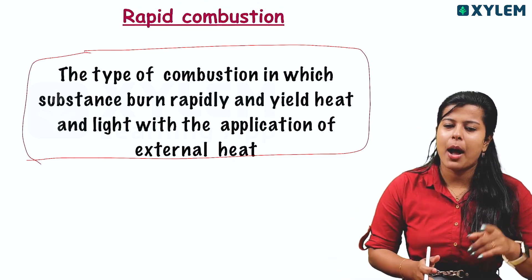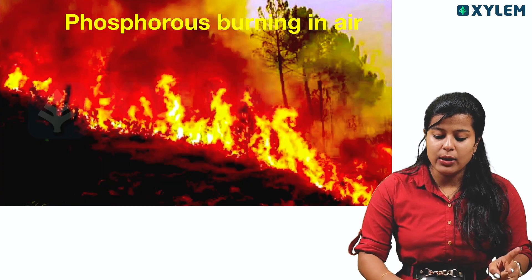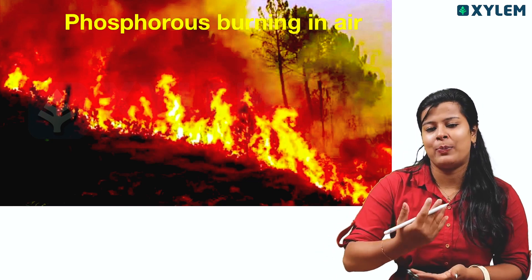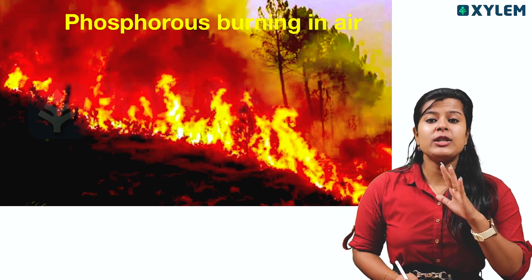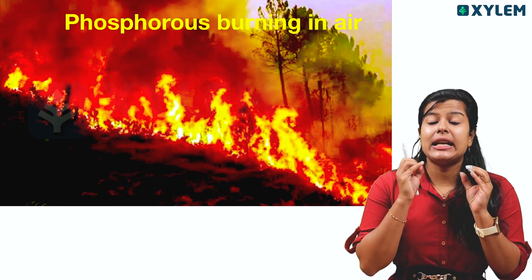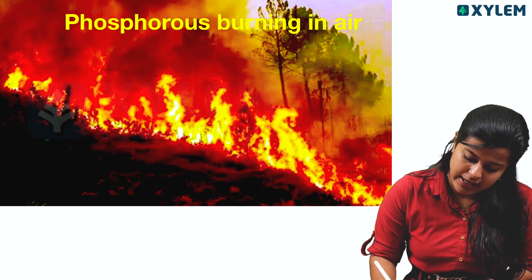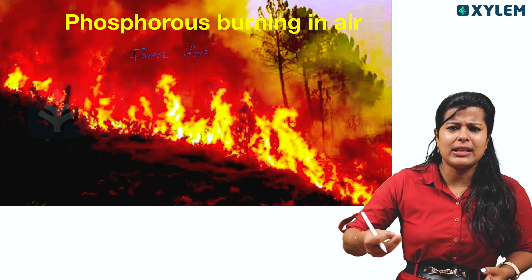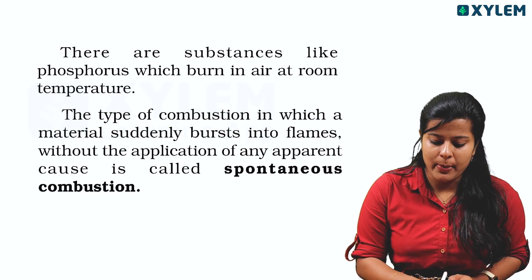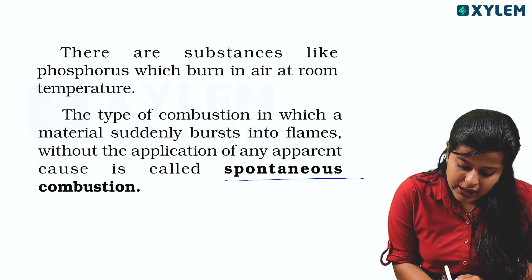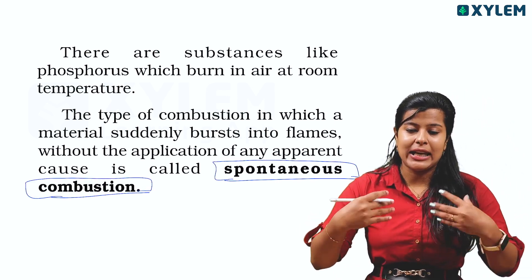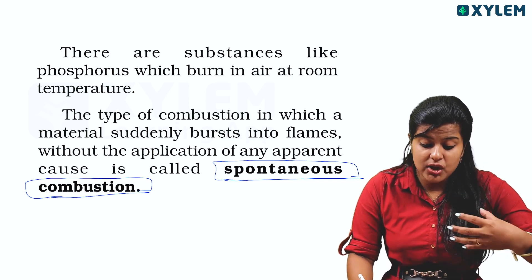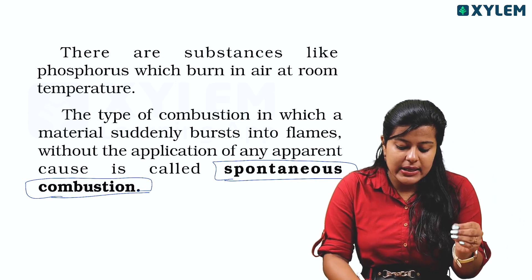The first type of combustion — rapid combustion — is complete. Now the second type. We have forest fire. Phosphorus burns — we just throw it and that burns without external ignition. What is the reason? Forest fire. This type of combustion we are going to call spontaneous combustion. The type of combustion in which a material suddenly bursts into flame without the application of any apparent external heat is called spontaneous combustion.